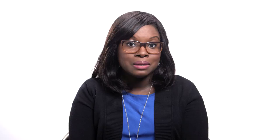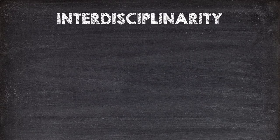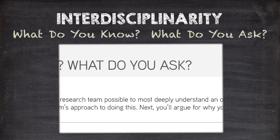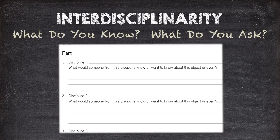Since the Big History course draws on content from many disciplines, we also help students develop skills in multidisciplinary or interdisciplinary thinking. One way we do this is with the 'What Do You Know, What Do You Ask' activity. As new disciplines are introduced, you present students with a big question or a contemporary problem — this might be a current event like responding to a refugee crisis, or something local like a recent archaeological discovery.